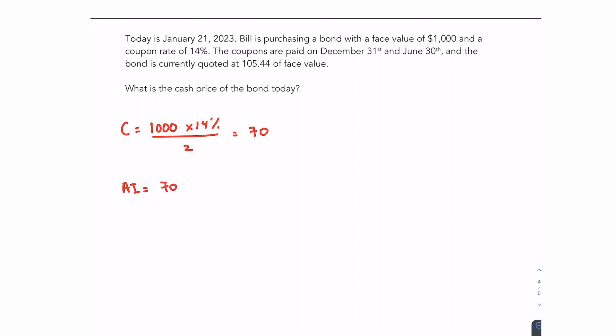For the accrued interest, you'll take that payment and multiply it by 21, which is the number of days that have accumulated since the previous payment date, divided by 181, which is the total number of days from December 31st until June 30th. The idea here is that you've accrued or you've accumulated 21 days worth of interest out of a 181-day period. So the accrued interest is $8.12.